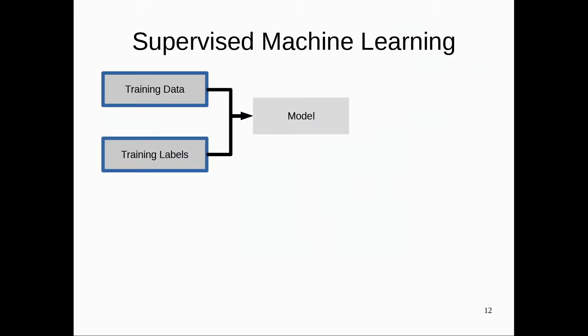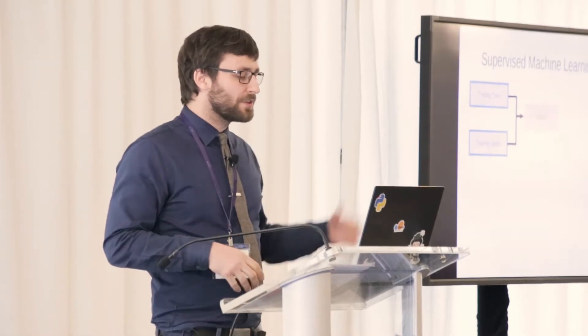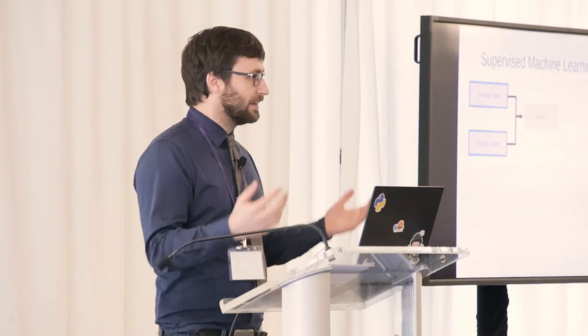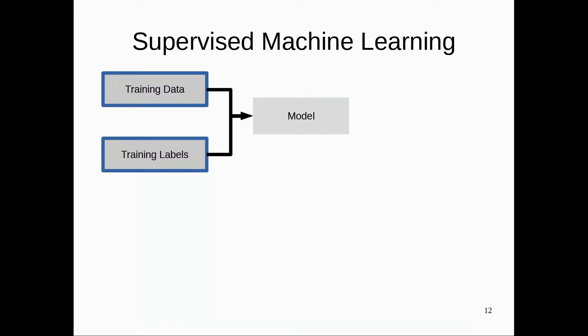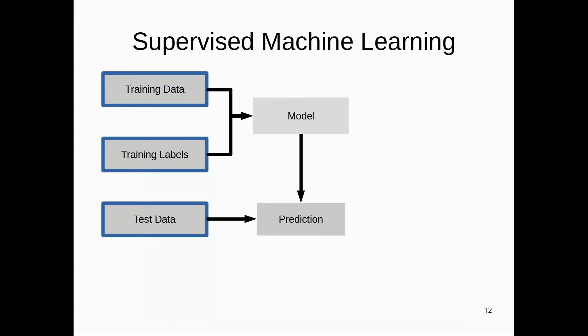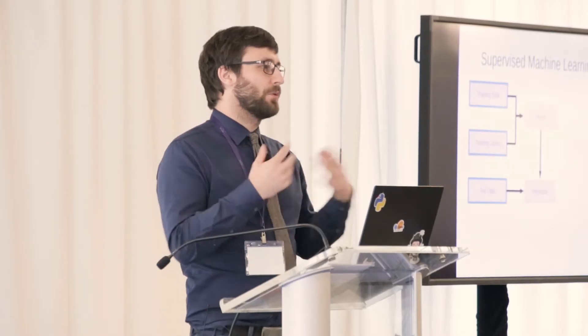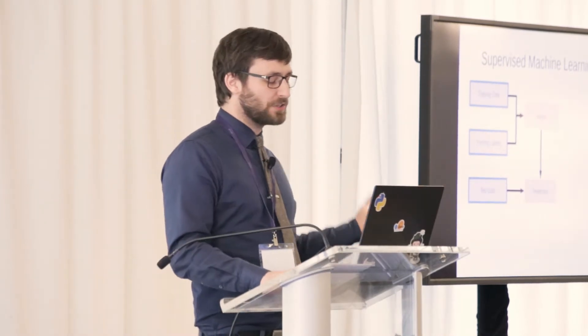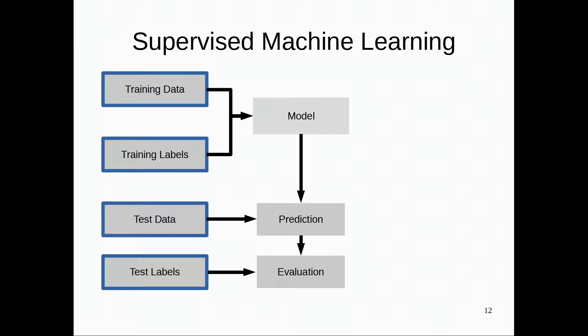Here's how I think about the machine learning pipeline, particularly supervised machine learning, which is the most commonly used form. You start with training data and training labels and you build a model — which could be regression, random forest, gradient boosting, whatever. You have some new data for which you don't have labels, for which you want to make predictions. Often you want to evaluate how good your model is, so you have holdout test data with test labels, which allows you to say how well your model generalizes.